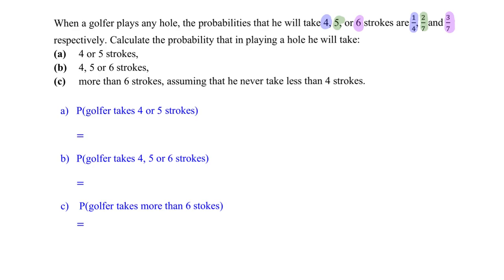So what do you think we should do? All we have to do is simply add up the probability of four strokes plus five strokes. That will give us 15 over 28.